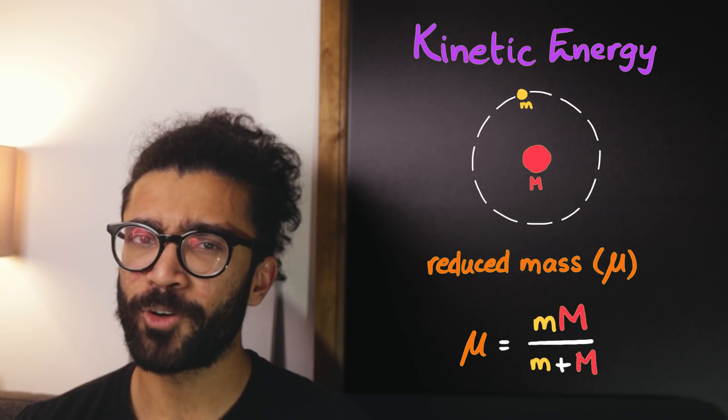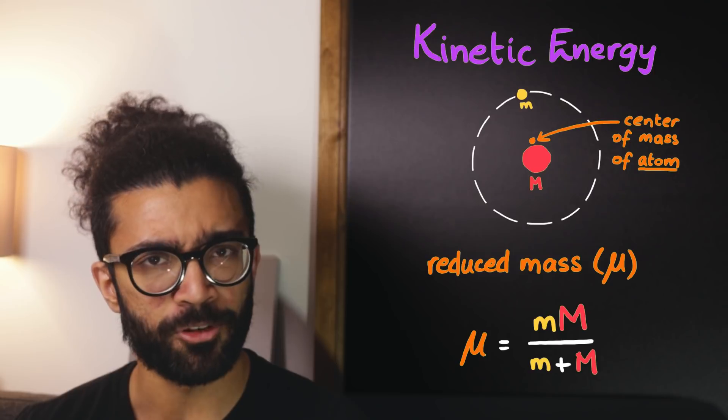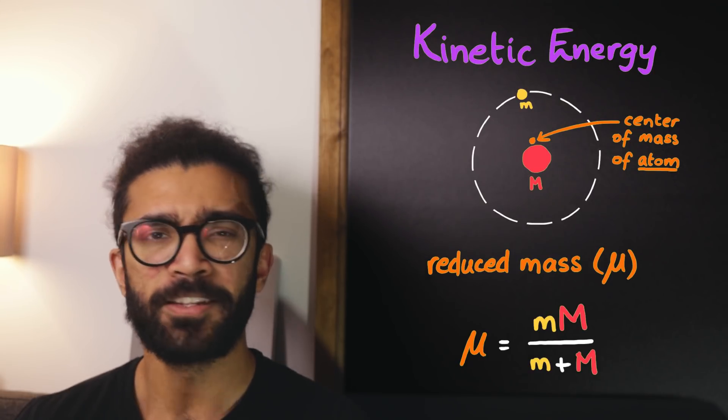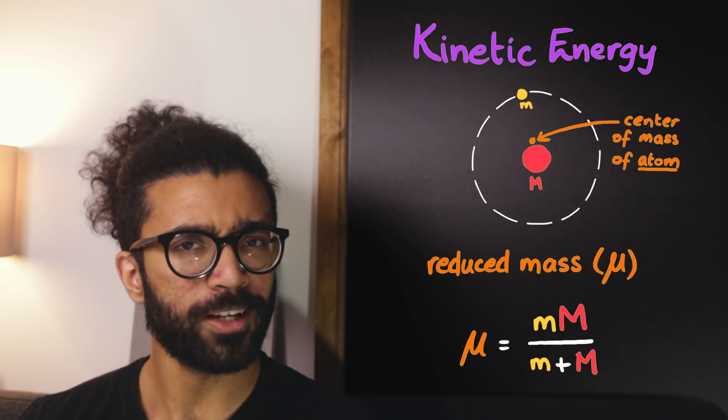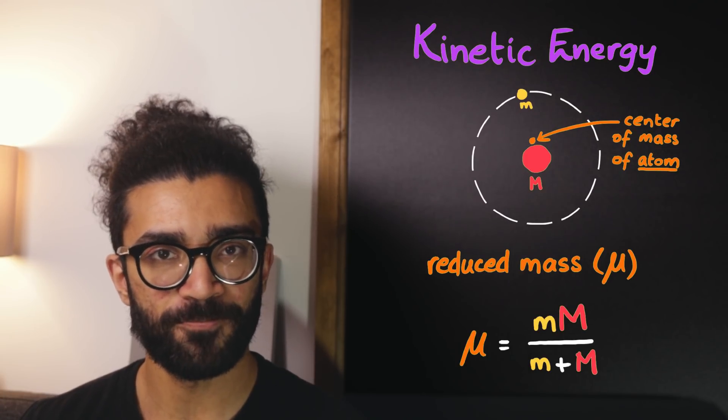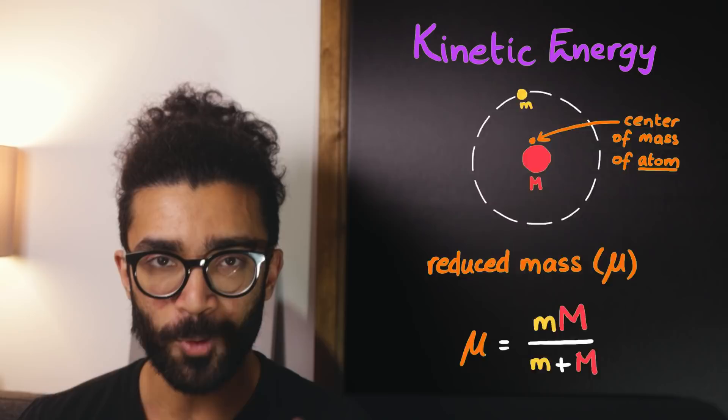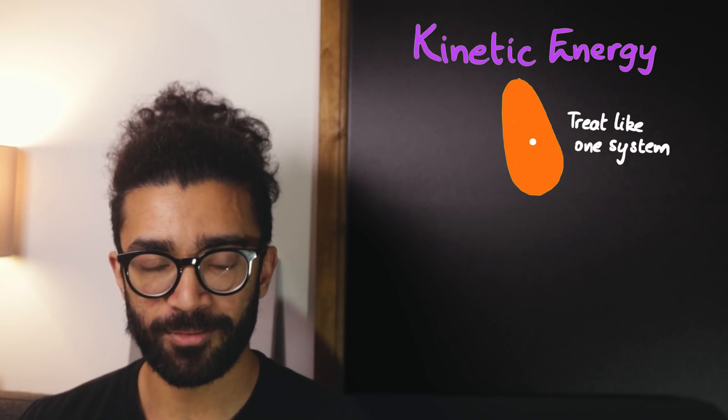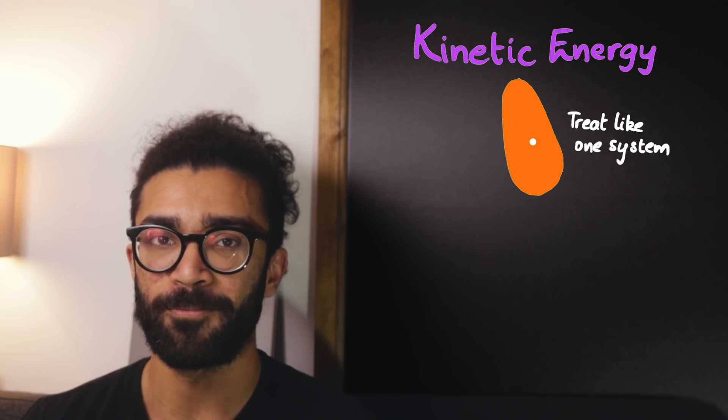This is essentially equivalent to following the motion of the centre of mass of a hydrogen atom. And this centre of mass ends up being somewhere quite close to the proton, because the proton is so much heavier than the electron. And this way, we treat the hydrogen atom as one system with one reduced mass rather than two separate particles. It just makes life easier that way.